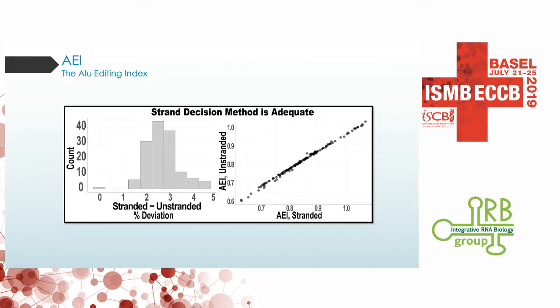We tested our strand-deciding method using a stranded dataset, and you can actually see that the values correlate beautifully. Even when you look at absolute values, the deviation between using the stranded information from the sequencing and our strand-deciding method is less than 5% typically.